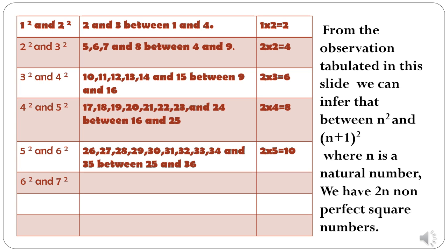Similarly, between 3 square and 4 square, we have 6 non-perfect square numbers. Between 4 square and 5 square, we have 8 non-perfect square numbers.